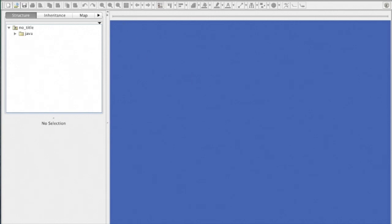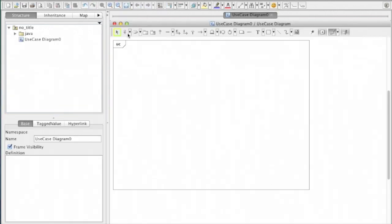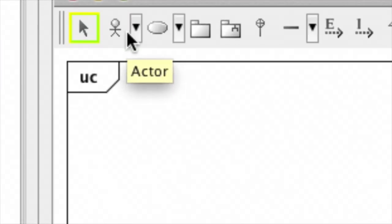First, create a diagram. Go to diagram and select use case diagram. Diagram is open now. There is a toolbar that has notations of use case models I just explained. Actor and use case.